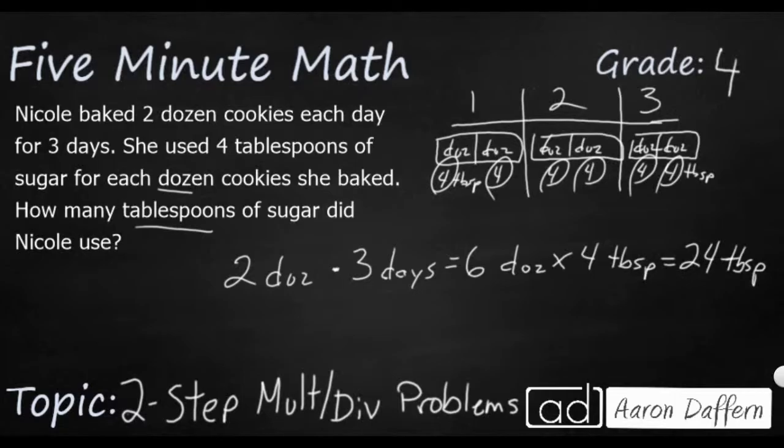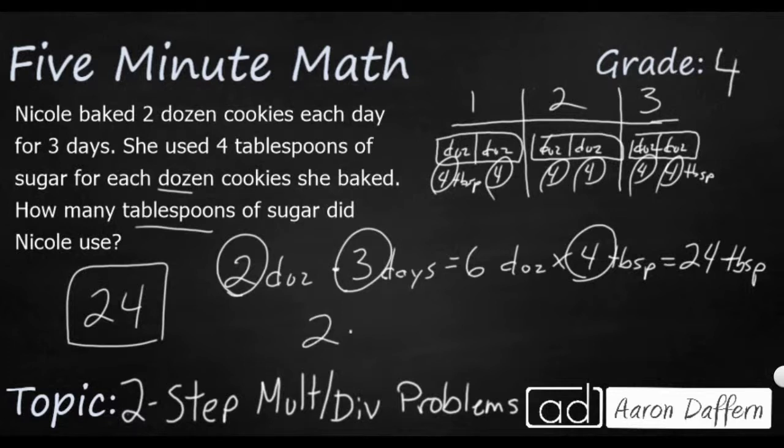Because what we did—we're going to write our answer right here, twenty-four tablespoons—we took our two dozen each day, multiplied that by three days, and multiplied that by four. So if we wanted to put it all together, we would do two times three times four. And that gets you your twenty-four tablespoons of sugar.